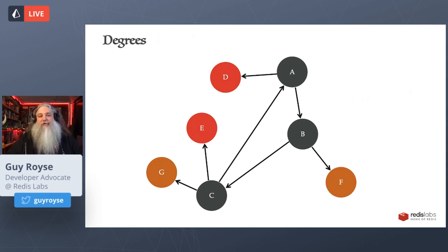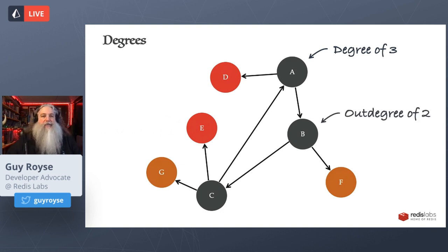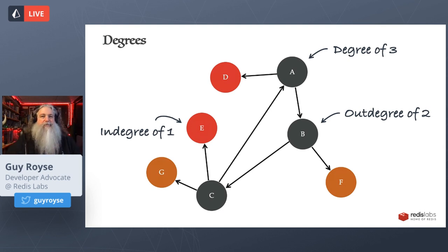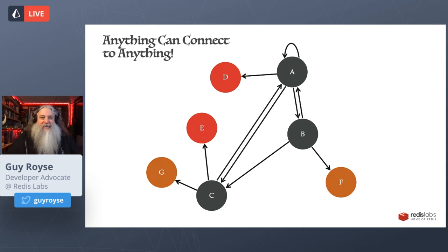Graphs have degrees — nodes on graphs have degrees. A degree is the number of relationships a node has, so node A has a degree of three. In a directed graph, you can have an out-degree and an in-degree, meaning the number of connections going out and the number going in. And none of these rules require a flat surface — you can really connect anything to anything, connect two nodes multiple times, or connect a node to itself. Relationships can be in all sorts of configurations.